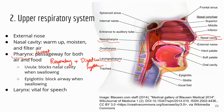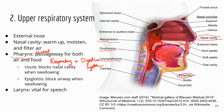In the pharynx, there are a few structures. The uvula is the little structure hanging from the roof of your mouth that you can see when you open wide. When you swallow, the uvula moves up and blocks the pathway to your nasal cavity so food doesn't go into your nose. The next structure is the epiglottis — when you swallow, the epiglottis comes down and closes the pathway to the trachea so food doesn't go down your respiratory tract, down your windpipe.